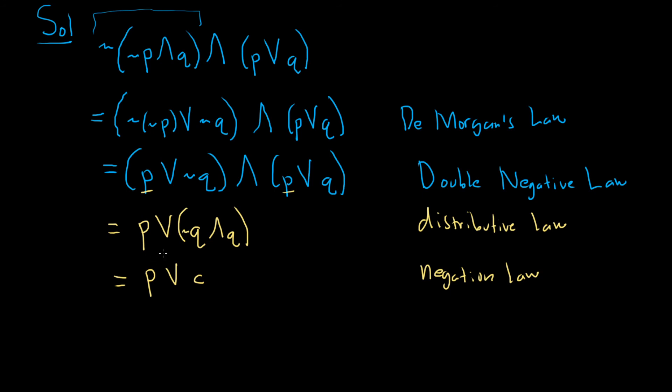And whenever you have p or c, where c is a contradiction, this is just going to be equal to p. This is called the identity law. So identity law.